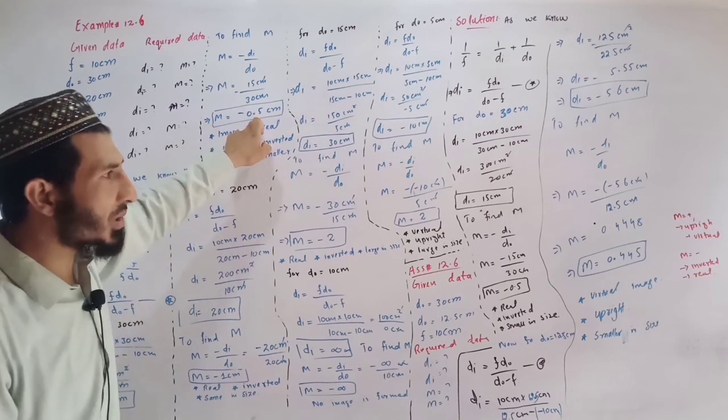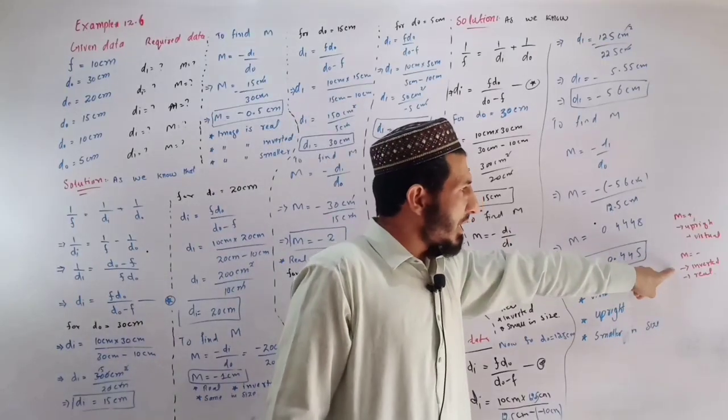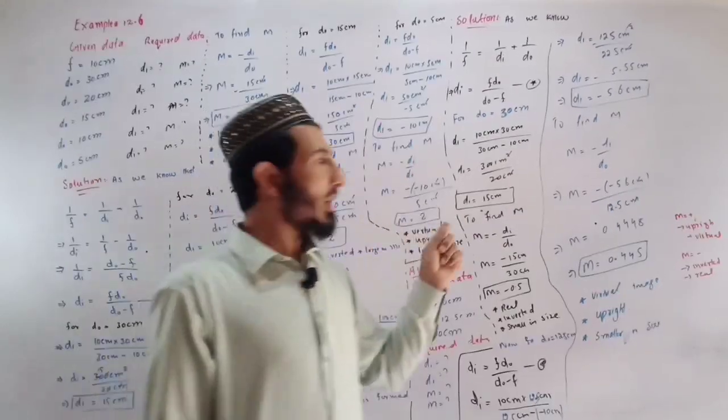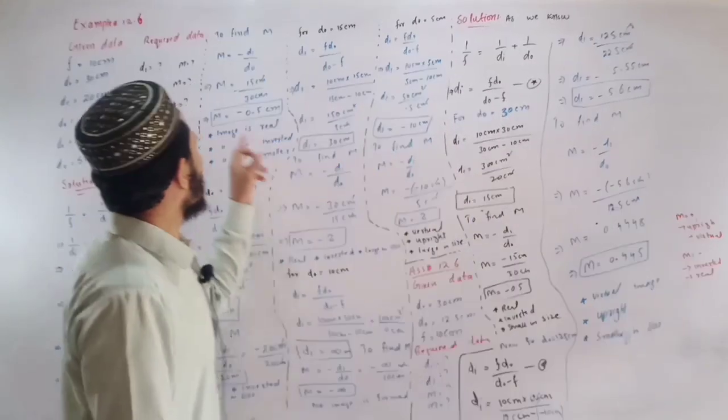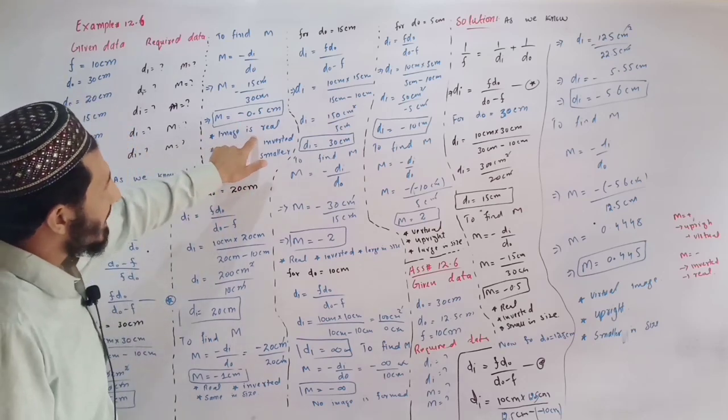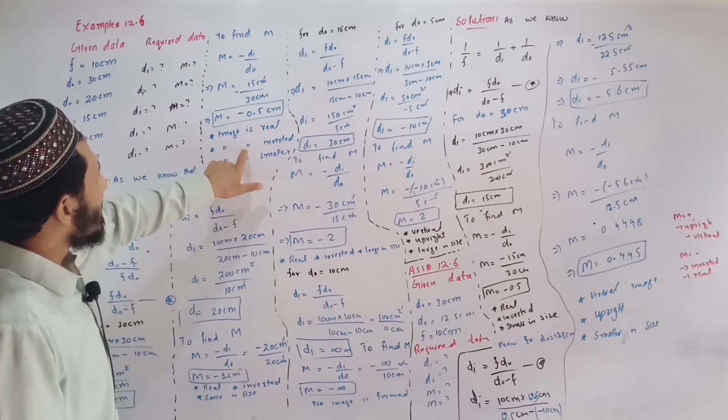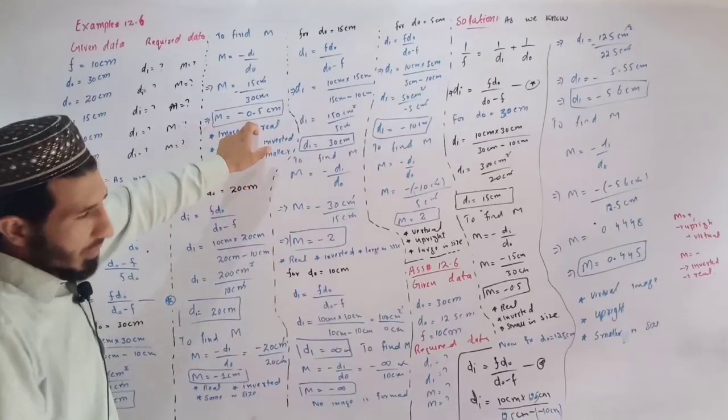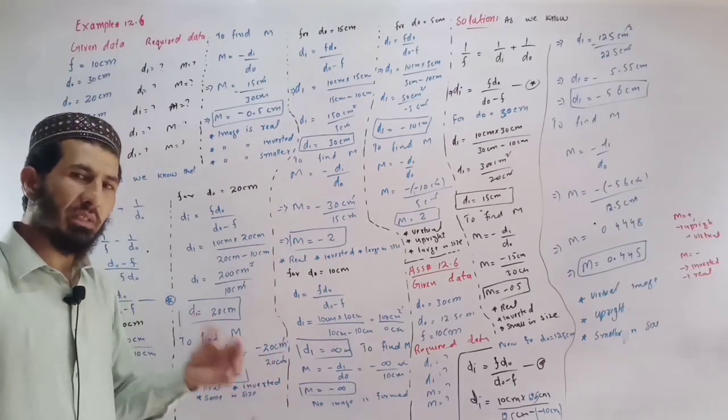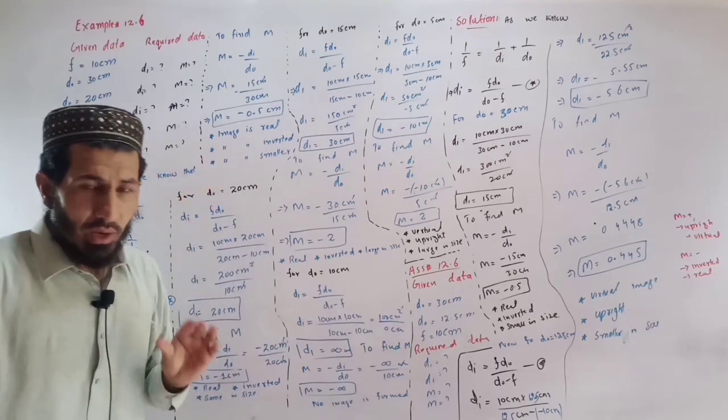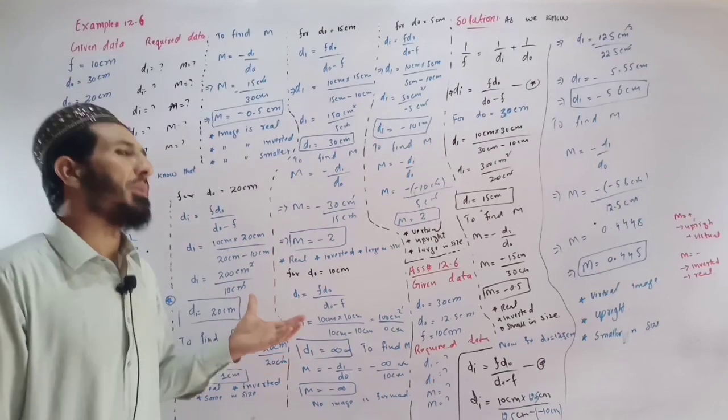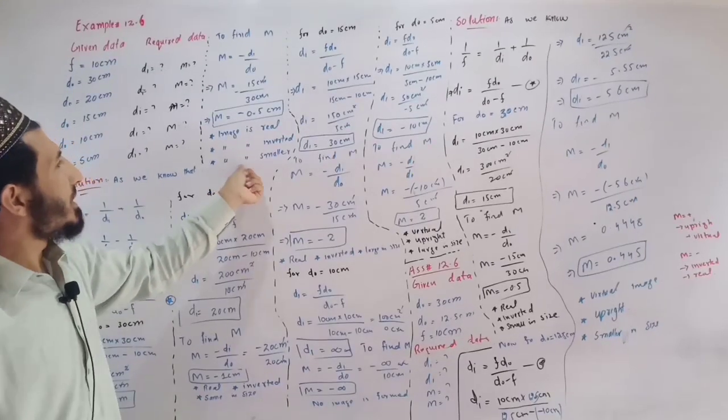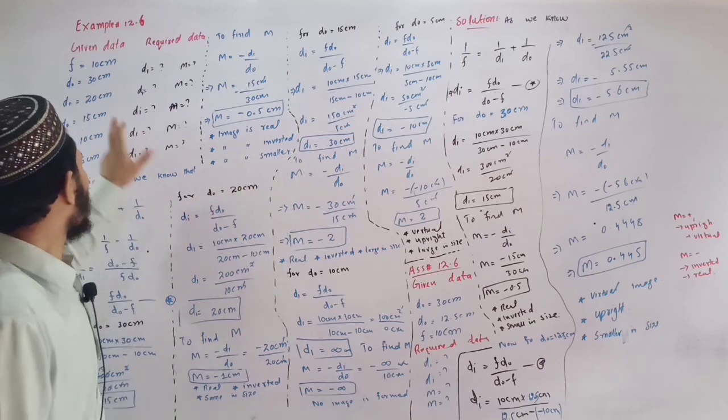Half, and how do you understand it? The image is real. The image is inverted. The magnification is 0.5, so the object and image size: the image size is smaller in size.